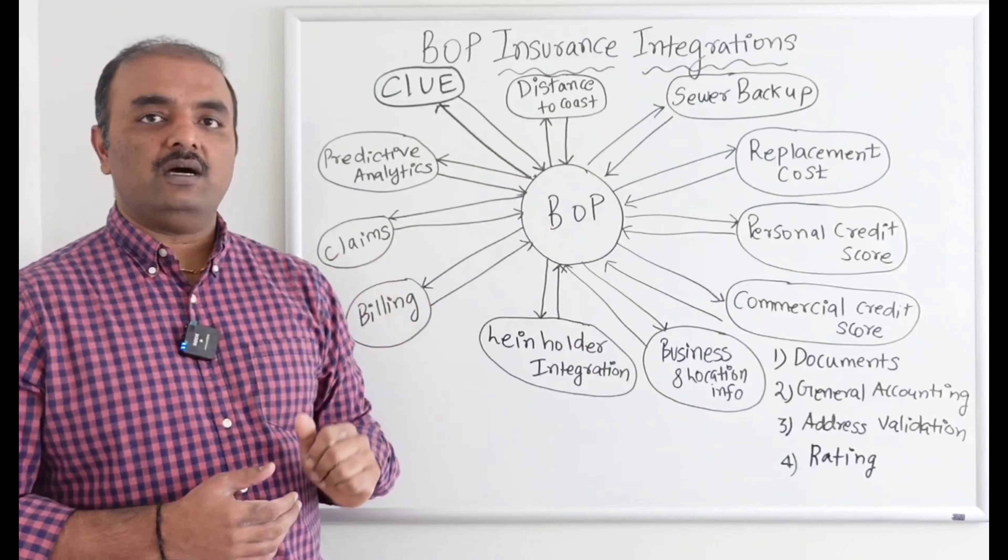Personal credit score — though we are talking about commercial insurance, this is relevant for sole proprietors who have no employees and run the business themselves. In those scenarios, we want to understand how that individual has behaved financially over the past 8 to 10 years, so we retrieve their personal credit score. This integration is not used for all companies, only for sole proprietors running the business individually.